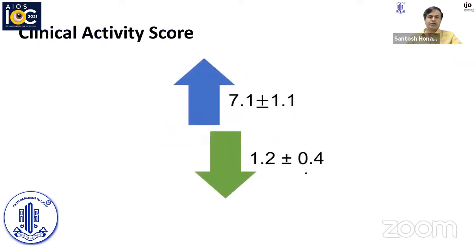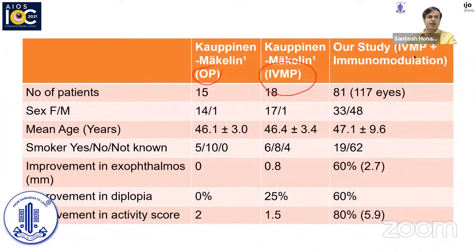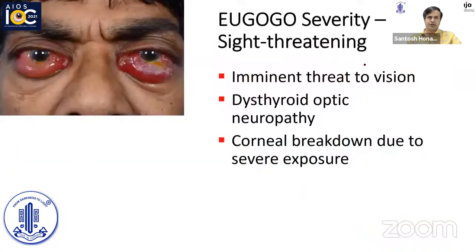Coming to remission of disease activity: one patient benefited both in terms of exophthalmos and disease activity by IVMP and azathioprine. Another patient needed rituximab and was not willing for surgery; his disease activity minimized but did not completely resolve. We found that about 90% of patients achieved remission from disease activity with intravenous methylprednisolone pulse therapy and immunomodulation. Clinical activity score came down from 7.1 at the start to 1.2 following treatment. Combining IVMP with immunomodulation seems to have a beneficial effect compared to oral prednisolone alone or IVMP alone.